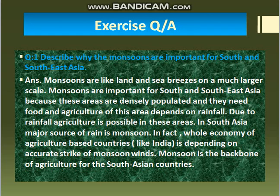The economy and financial status of these countries depends on the accurate arrival of monsoon winds. Monsoon is the backbone of agriculture for South and Southeast countries. If monsoon seasonal winds fail, the entire agricultural economy is affected, as it plays the main role in sustaining these nations.